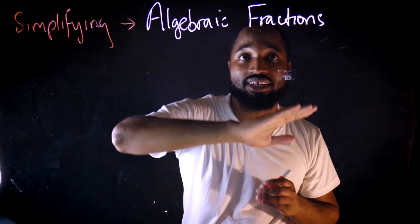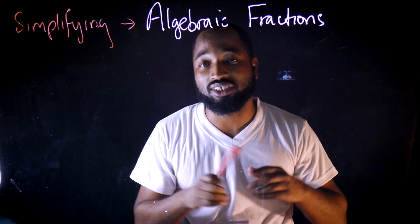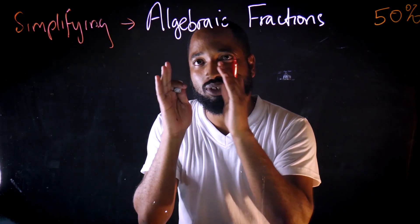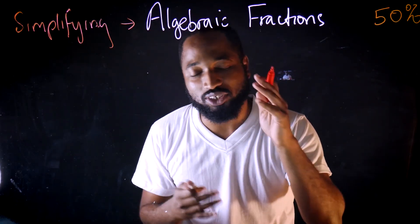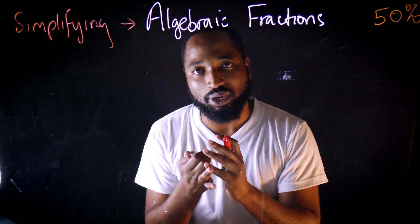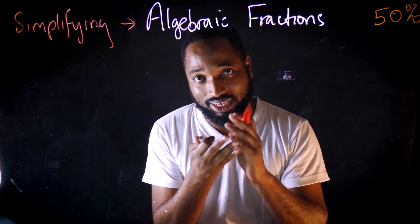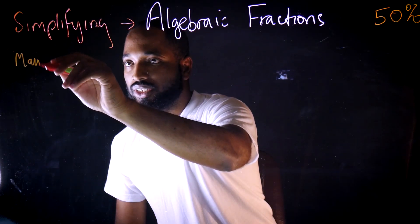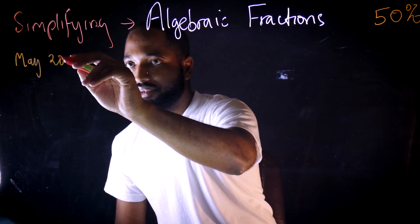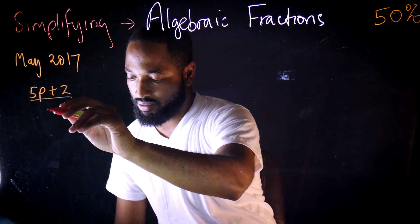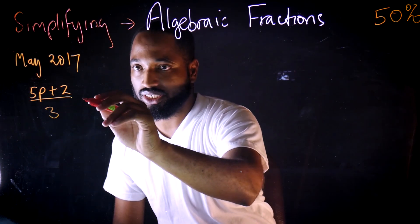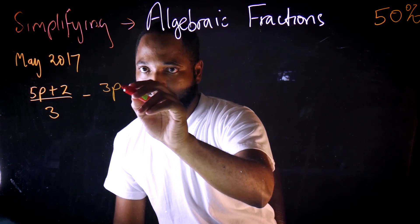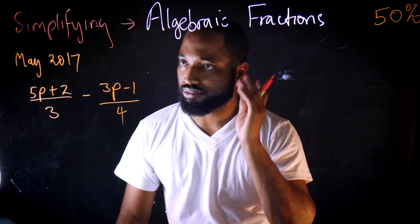Today we're just going to look at simplifying algebraic fractions. This comes up 50% of the time — it didn't show up in January or May 2018, but it was there for January and May 2017. For May 2017 we had 5p over 3 take away (3p minus 1) over 4.